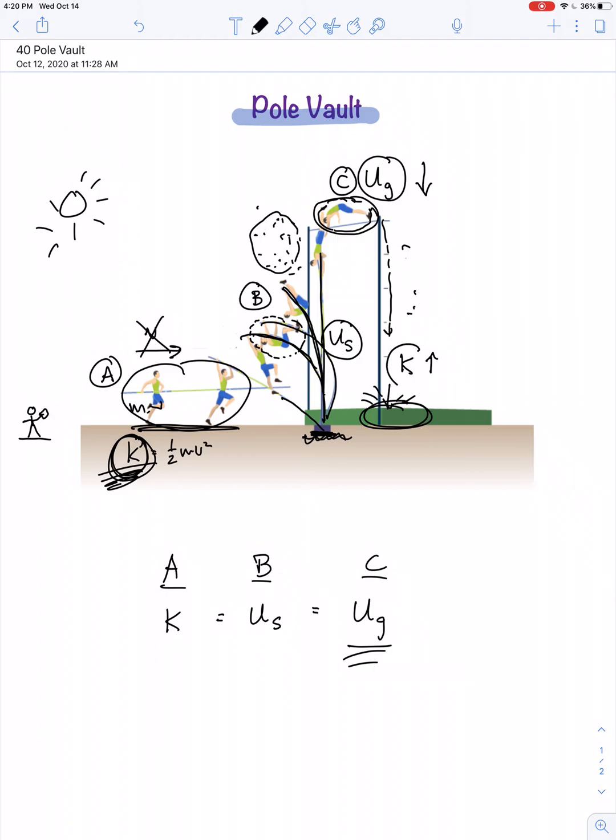And, in the end, the pole vaulter is not going to have kinetic energy after they've collided with the mat. The pole vaulter, in the end, will come to rest. So, what's become of all the mechanical energy?